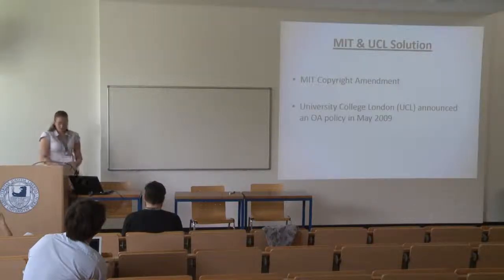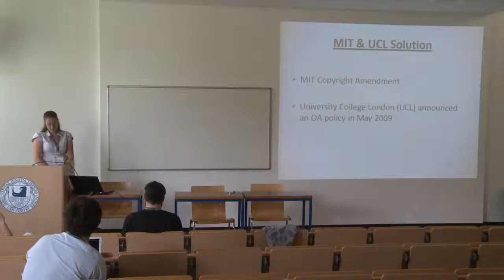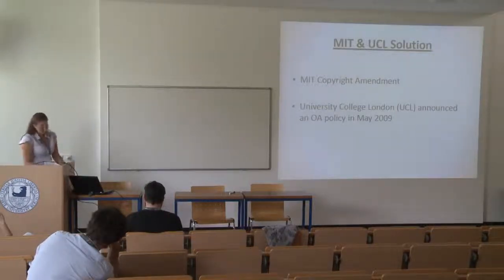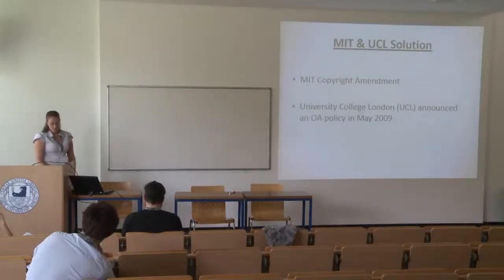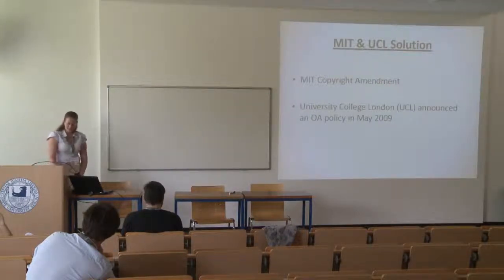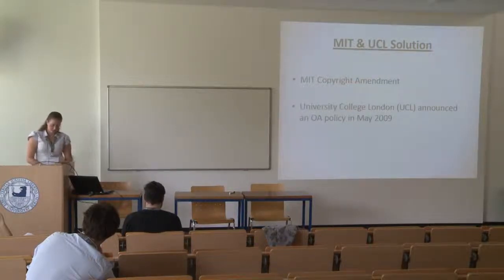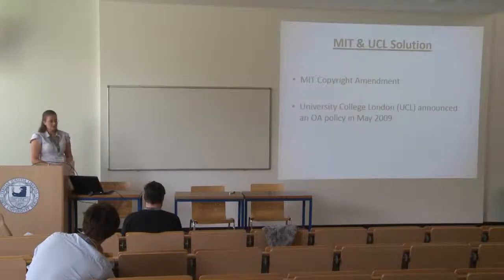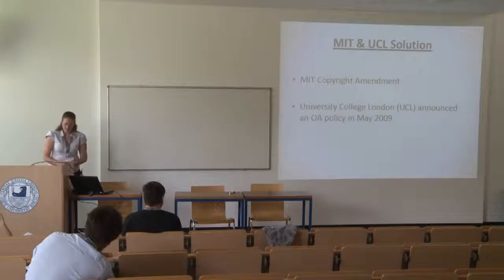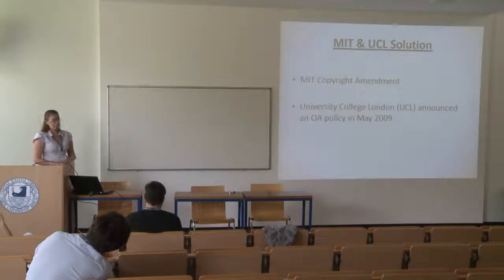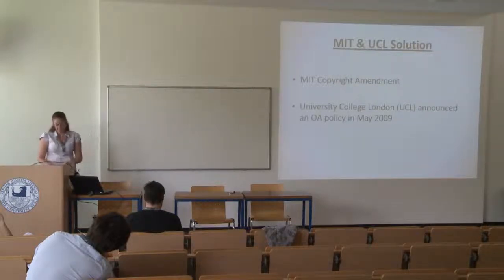MIT offers a solution to this problem. The institution supports the researcher through a mandatory requirement to publish the article in open access. For that purpose, MIT created an addendum called the MIT Copyright Amendment, which can also be found on the Scholar's Copyright Addendum Engine. Similarly, University College London announced an open access policy in May 2009. Under this policy, UCL reserves the right to publish its scholars' research in open access, and researchers have responsibility to ensure this open access policy is preserved by publishers.